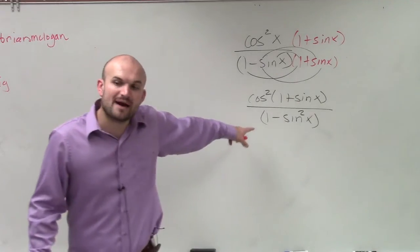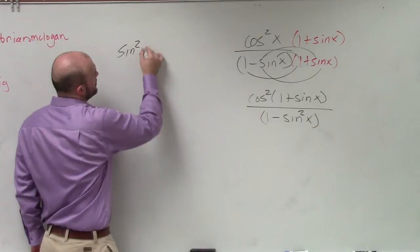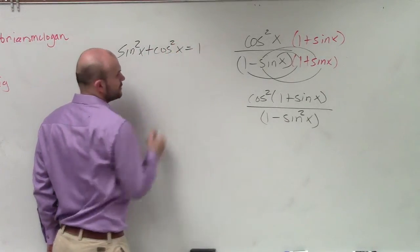So now I'm left with 1 minus sine squared. Well, how can I rewrite 1 minus sine squared? Remember, sine squared of x plus cosine squared of x equals 1.